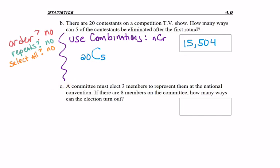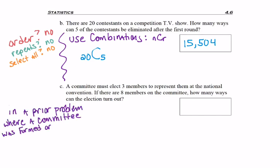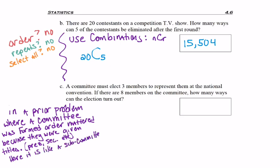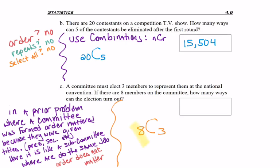Question C: a committee must elect three members to represent them at the national convention. If there are eight members on the committee, how many ways can the election turn out? In a prior problem where a committee was formed and order mattered, it was because we gave them titles like president and secretary. Here it's like a subcommittee where they all do the same job, so order does not matter — if job one and job two are exactly the same, you don't care which is which. So we have the combination of 8 people choose 3, where order does not matter and repeats are not allowed, to get 56 different ways to select three members at large.